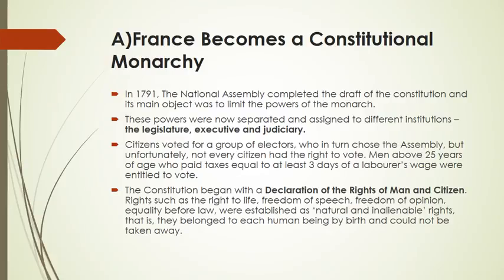The National Assembly completed the draft of the constitution in 1791, and its main objective was to limit the powers of the monarch. The powers were assigned to different institutions, like the legislature, executive, and the judiciary.